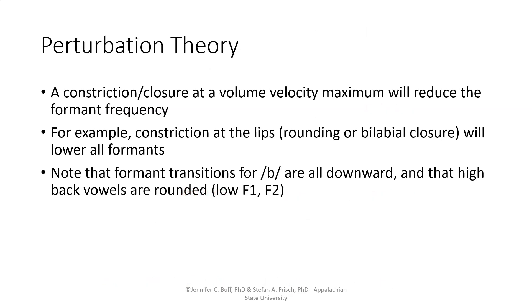The core of perturbation theory is that a constriction or closure at one of those maximum locations will reduce the corresponding formant frequency. For example, making a constriction at the lips through rounding or a bilabial closure — at the open end of the tube, which is a volume velocity maximum for all formants — will cause all of the formants to be lowered. This appears to be a good prediction: formant transitions for a 'buh' all come from a lower frequency up into the vowel, and rounded high back vowels have lower F1 and lower F2 than other vowels.